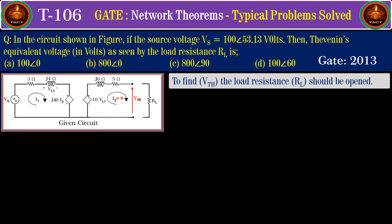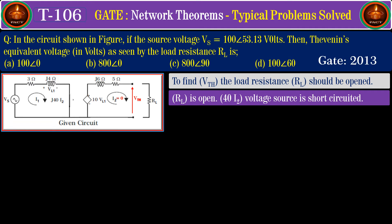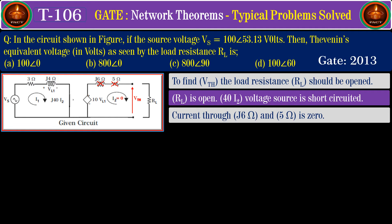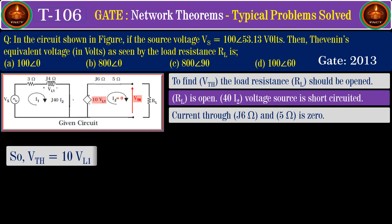Once the load branch is open, current I2 becomes zero. Because I2 equals zero, the current-controlled voltage source of j40 times I2 also becomes zero and is short-circuited. Also, since I2 equals zero, the current through the j6 ohm and 5 ohm elements is zero, so the voltage across them is zero and they can be treated as short circuits.